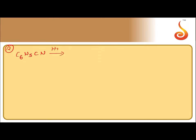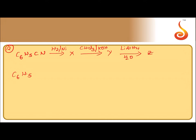This is the 12th question in homework. First, C6H5CN is treated with H2 and Ni to give X. When C6H5CN is treated with H2 and Ni, the cyanide gets reduced to give a primary amine — C6H5CH2NH2. So X is the primary amine.